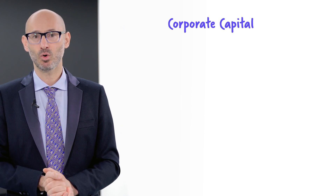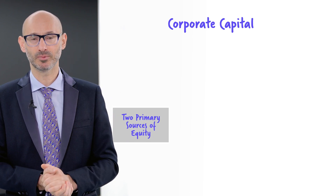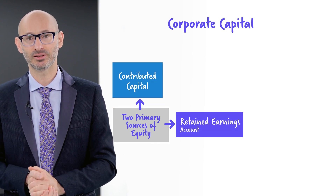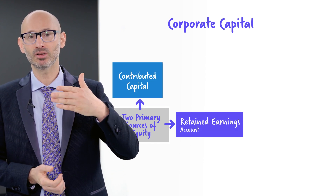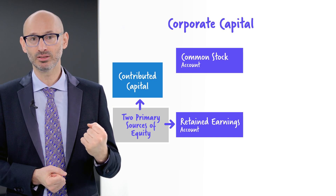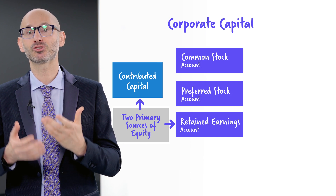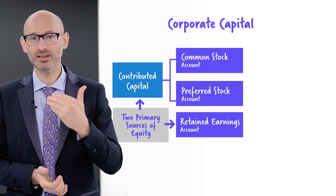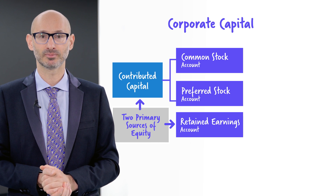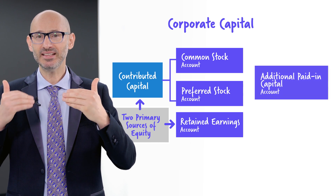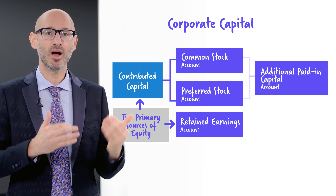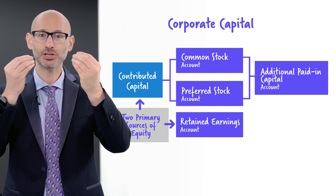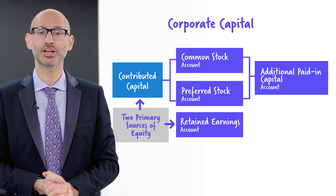We have two sources of equity: one that is invested and one that is earned. The invested component comes from common stock and also from preferred stock. Preferred stock is normally non-voting and comes with a dividend. We also have paid-in capital, which is a legal requirement in many places. If you buy back shares, then these are called treasury shares.